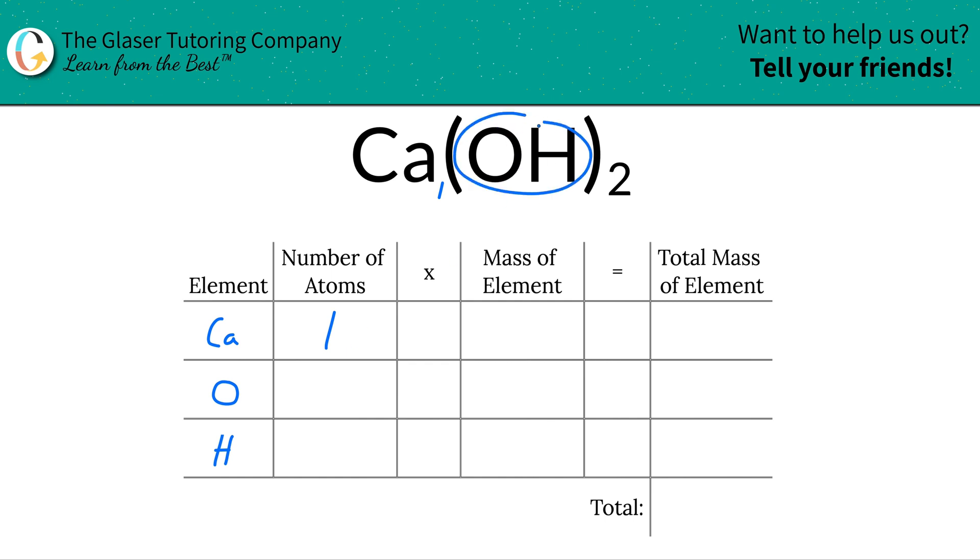Now for oxygen, oxygen is part of the polyatomic anion hydroxide. In each hydroxide you have one oxygen, but wait a minute, you have two hydroxides overall. So that means you should have a total of two oxygens. In other words, you can take the subscript of oxygen and simply multiply it by the subscript there on the outside, so that would be a total of two.